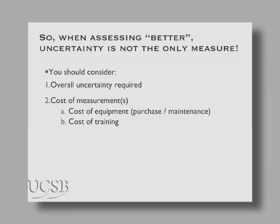Despite the heart-attack-inducing effects of asking for a large amount of money up front to buy equipment, that's not really where the money goes when you make chemical measurements. A big expense is: how much does it really cost to train somebody to use that equipment? If it takes six months to train somebody to make a measurement, that's a very big expense — easily outweighing the cost of buying easier-to-use equipment in the first place.